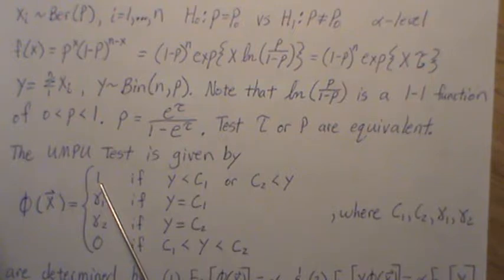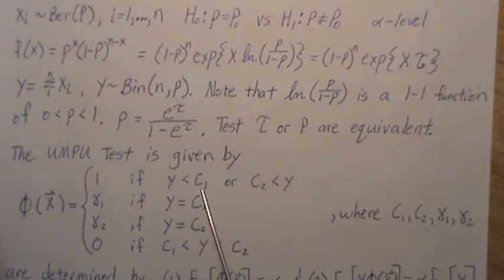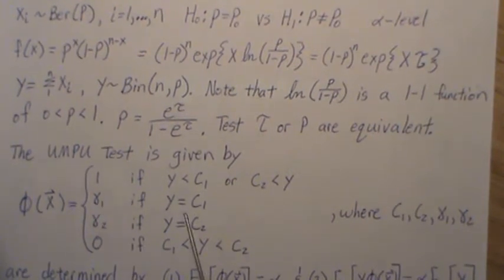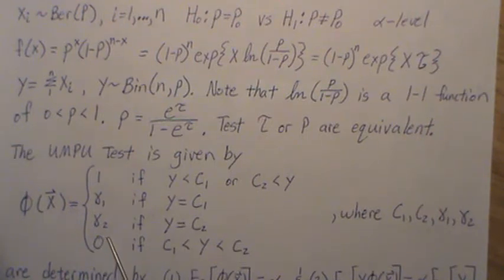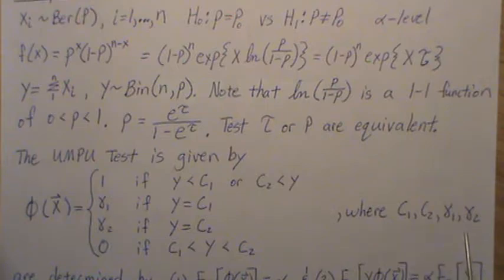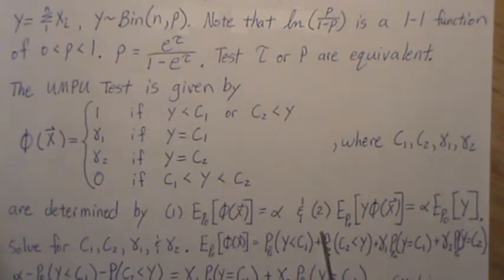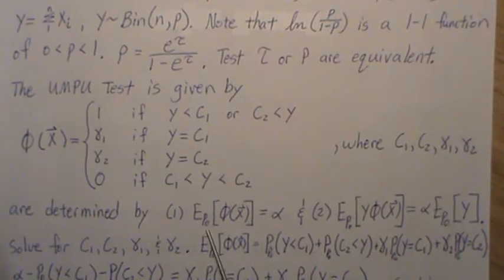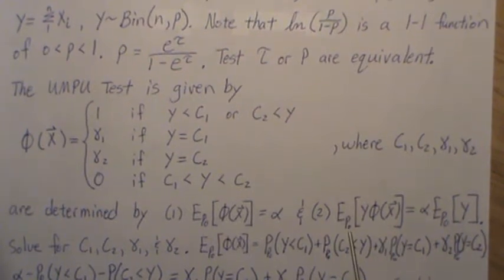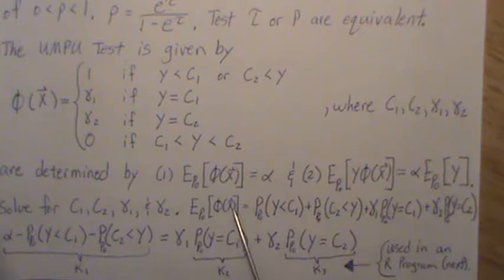It turns out that a test for tau or P are equivalent. The uniformly most powerful unbiased test is given by this. This is our test function phi. We reject the null hypothesis if Y, our test statistic, is less than or equal to some value C1 or greater than some value C2. We randomly reject the null hypothesis with probability gamma 1 if Y equals C1 and with probability gamma 2 if Y equals C2. We do not reject if Y is between these two values.